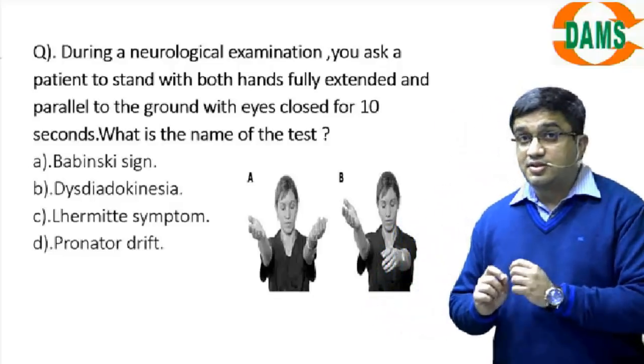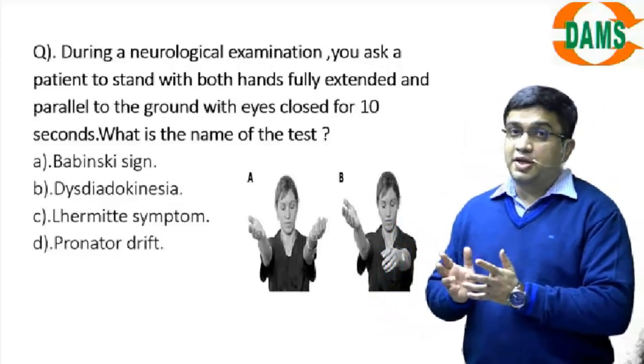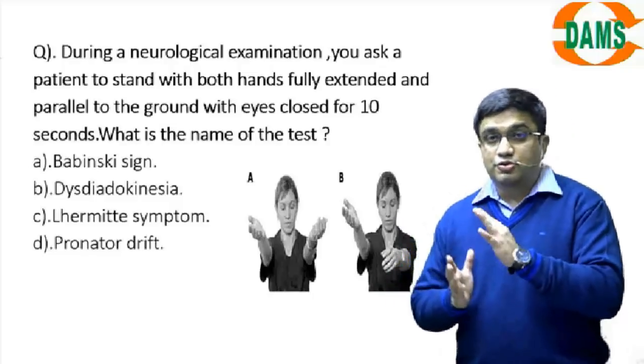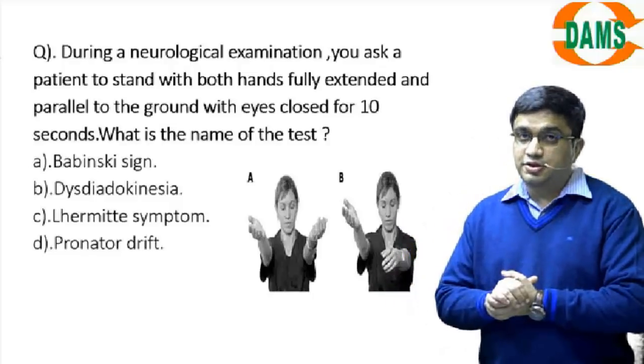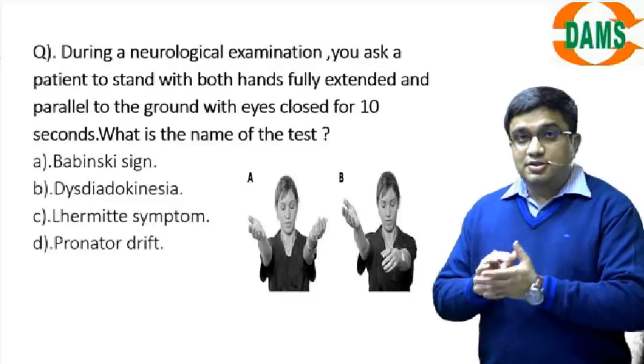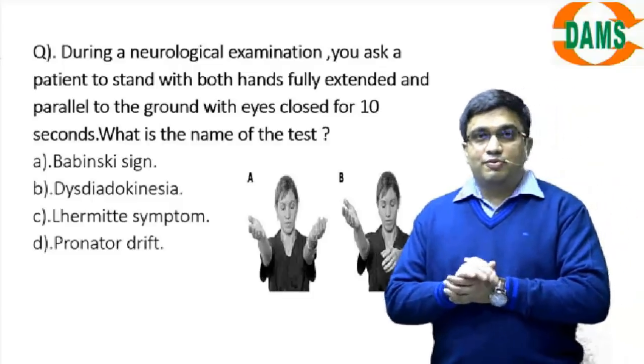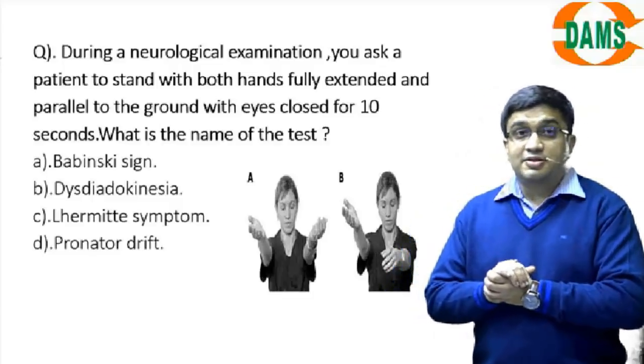That is again a sign to see the corticospinal tract injury because all falls into one group, that is an upper motor neuron kind of a lesion. And this is another old sign, non-specific, known as Lhermitte sign.